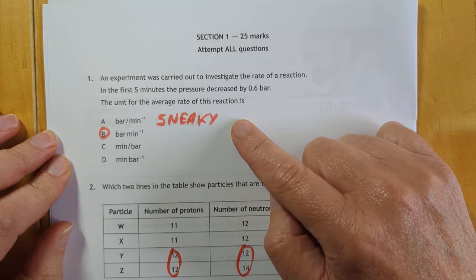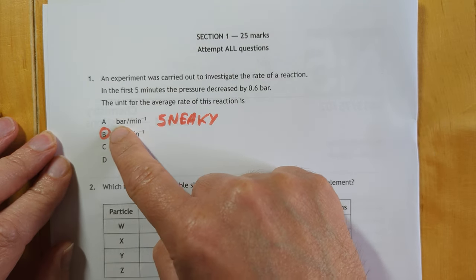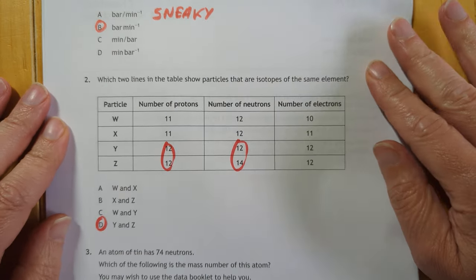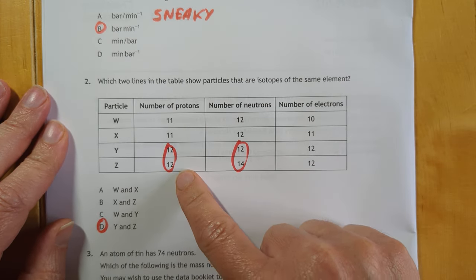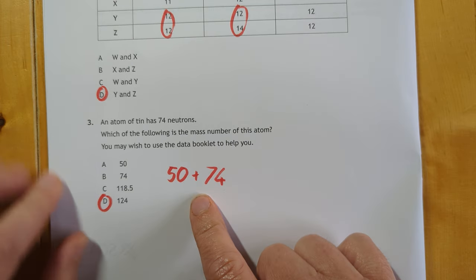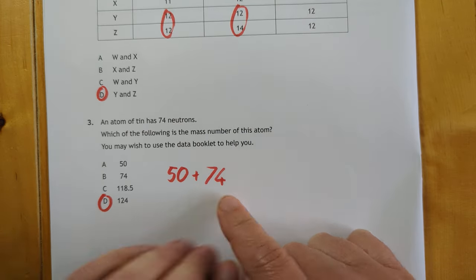Number one, sneaky question, because it's more of a maths thing than a chemistry thing. You'd be tempted to put that one, but the slash and the minus one means it's wrong. It's bars per minute in this one. Isotopes, same number of protons, different number of neutrons, that one there. I had to go and look it up, couldn't remember the atomic number of 10, it's 50, plus 74 gives you 124.